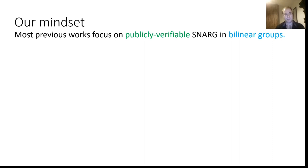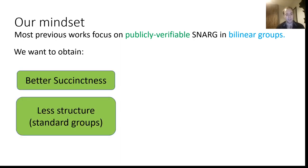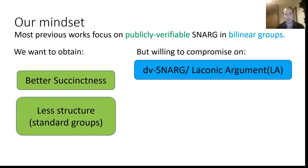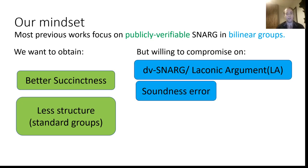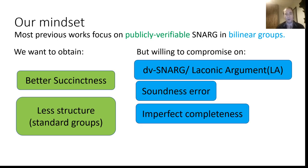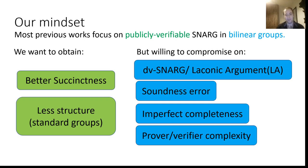Our mindset, in contrast to previous works: previous works focus on publicly verifiable SNARKs in bilinear groups. We want to beat the succinctness — get less than 1,000 bits proof length — and use less structure, so only standard groups. To do so, we are willing to compromise on designated verifier or laconic argument rather than publicly verifiable SNARKs. We are willing to compromise on soundness error, and most crucially, on imperfect completeness. This is the first work, as far as we know, that uses this relaxation of imperfect completeness. We are also willing to compromise on prover and verifier complexity. Nonetheless, our constructions are highly practical in some real-life scenarios.